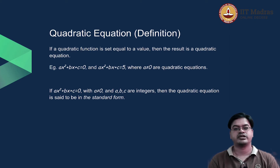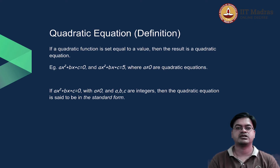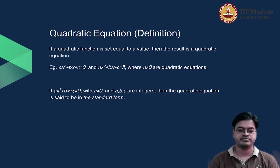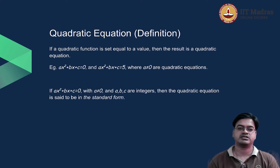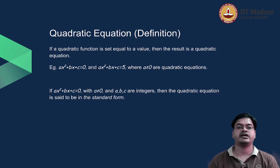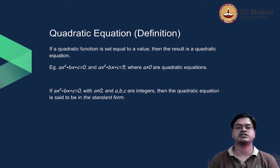So on this slide we have seen two definitions. One: what is a quadratic equation? A quadratic equation is nothing but a quadratic function equated to some value. And two: what is the standard form of a quadratic equation? That is ax² + bx + c = 0, where a, b, c belong to the integers (ℤ) and a ≠ 0.